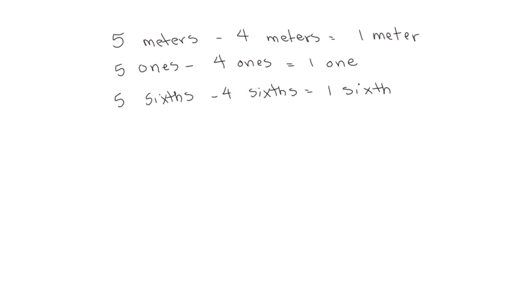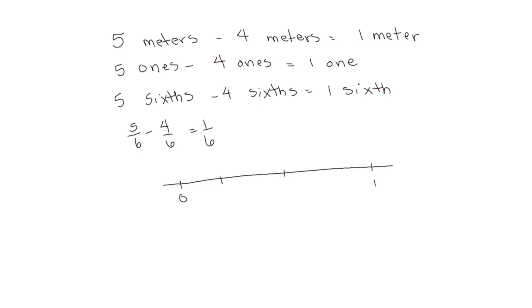We could also show this as a number sentence: 5 sixths minus 4 sixths equals 1 sixth. We can also show it on a number line. We have 0 and 1, and we're going to divide it into 6. Starting at 5 sixths and taking away 4 sixths — 1, 2, 3, 4 — we end up at 1 sixth.